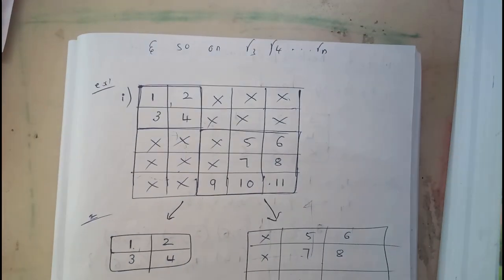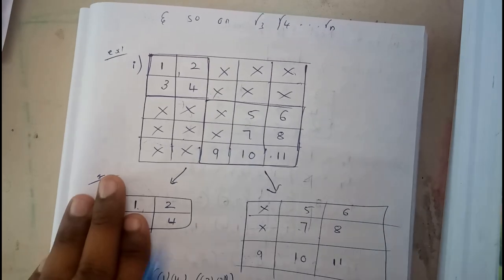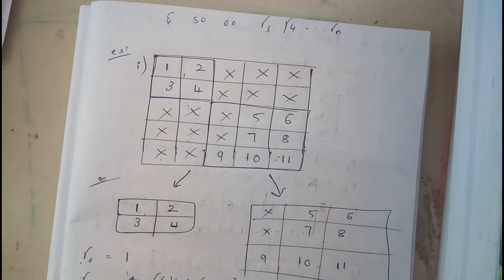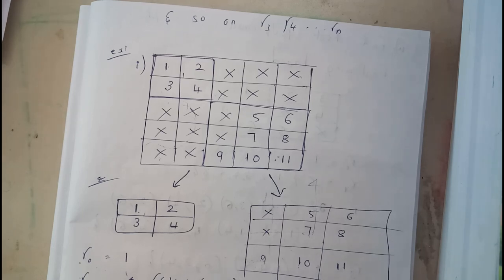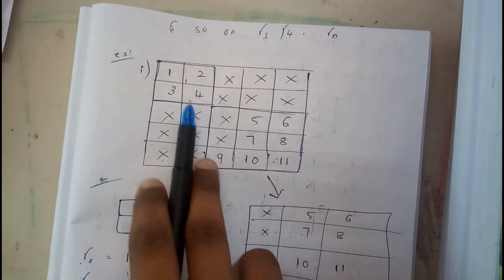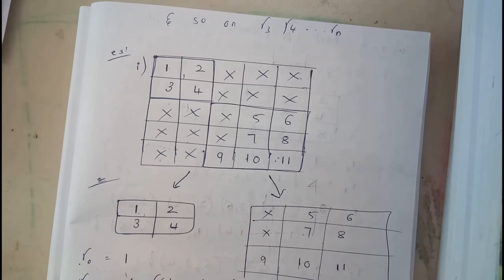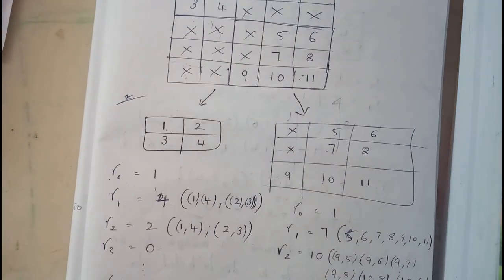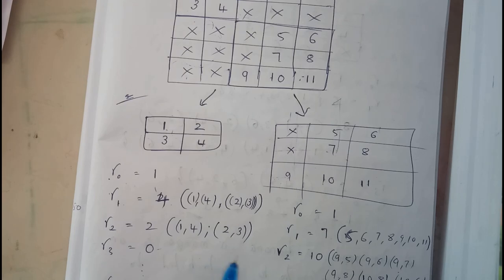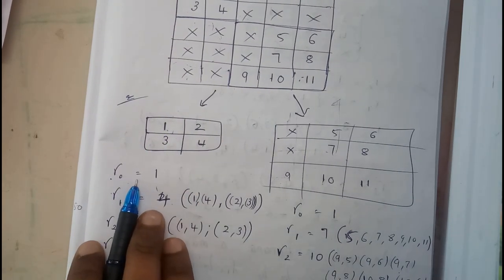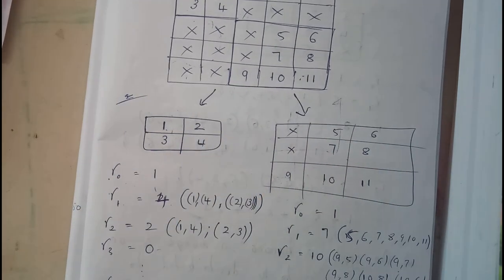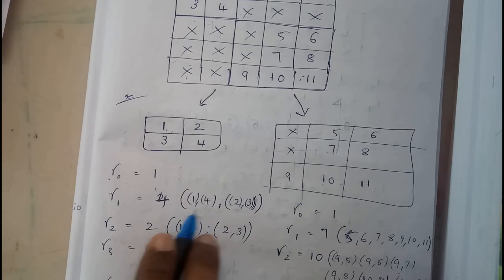Here is the first problem — a 5×5 board with most positions marked as X. We remove the X's and identify the empty sub-regions. We can clearly form a 2×2 square on the left and a 3×3 square on the right. Let's solve the left (2×2) one first. r0 = 1 always, and r1 counts individual elements: positions 1, 2, 3, 4 — so r1 = 4.